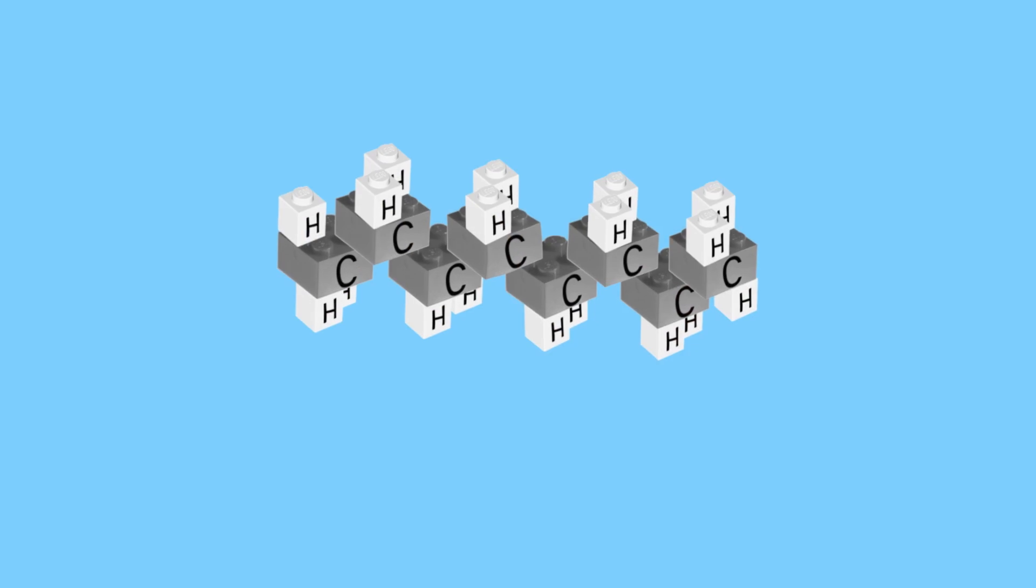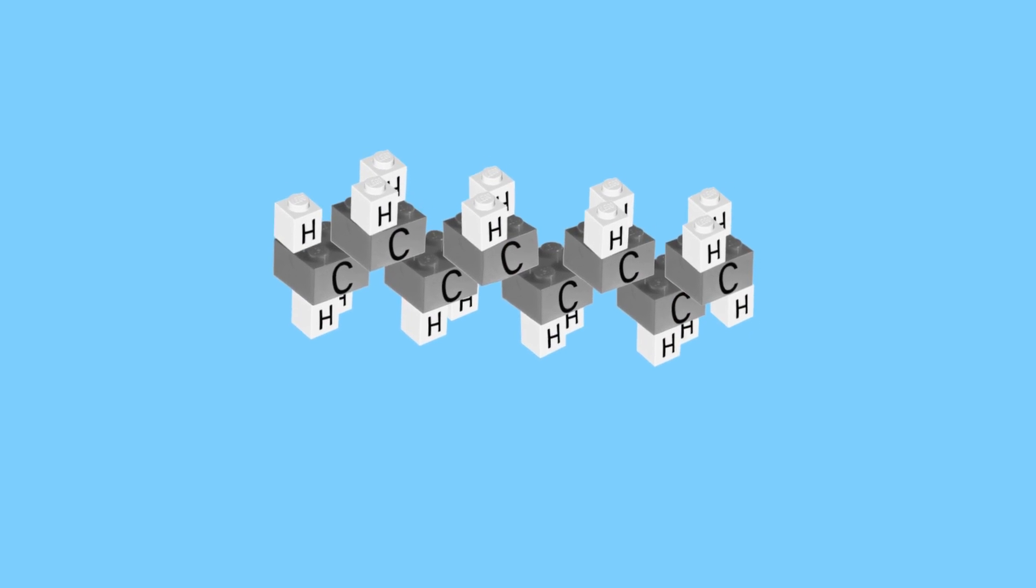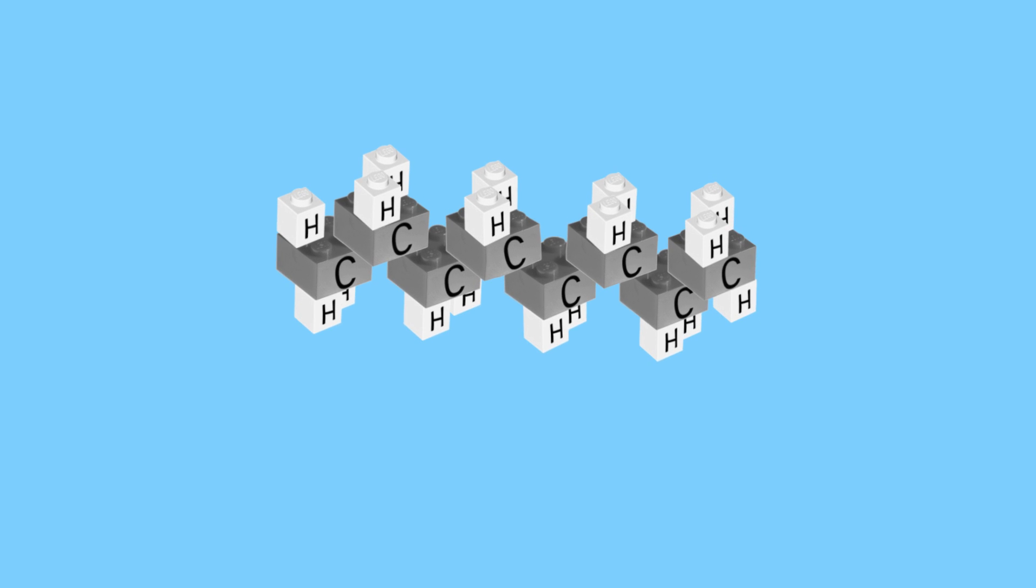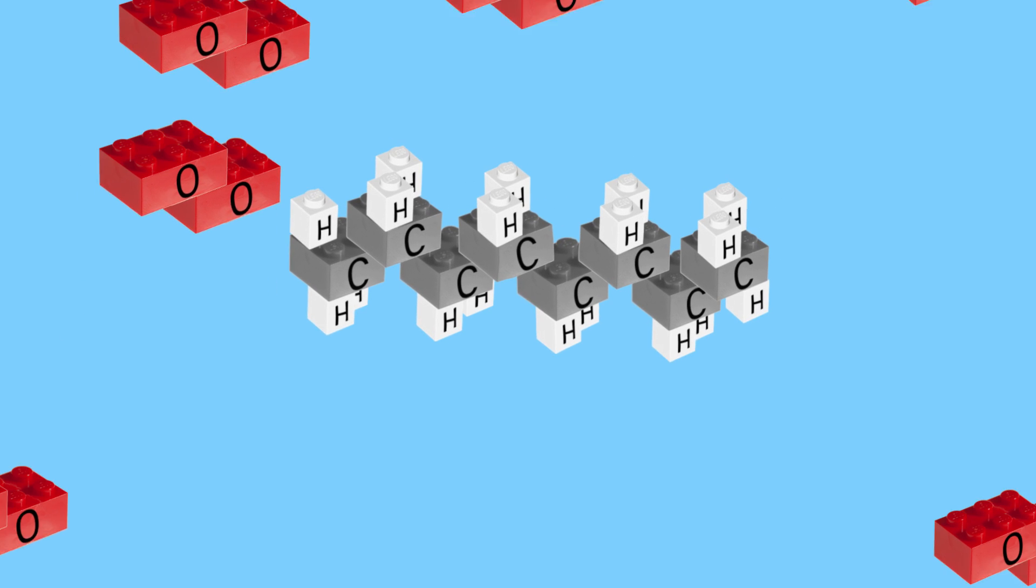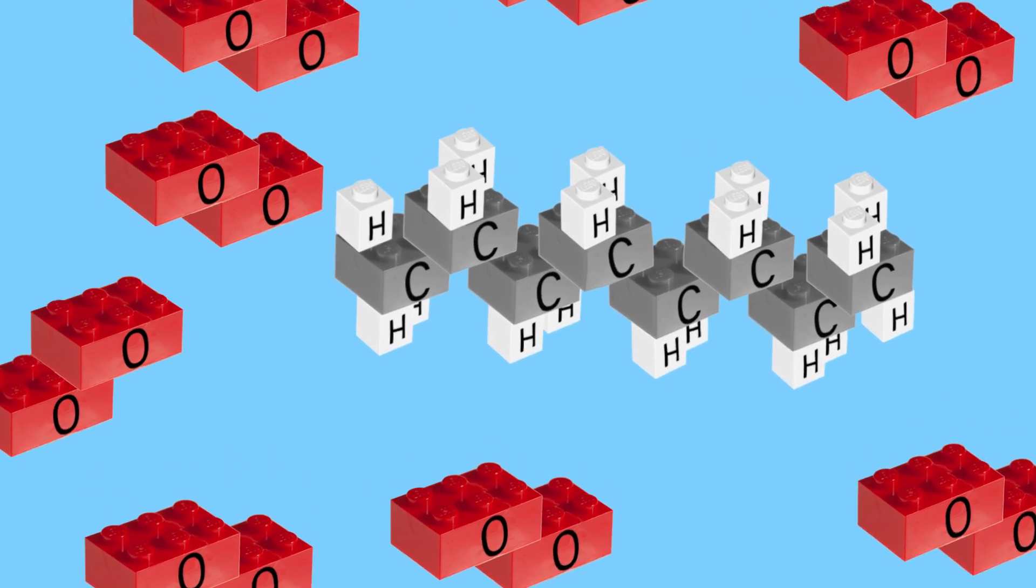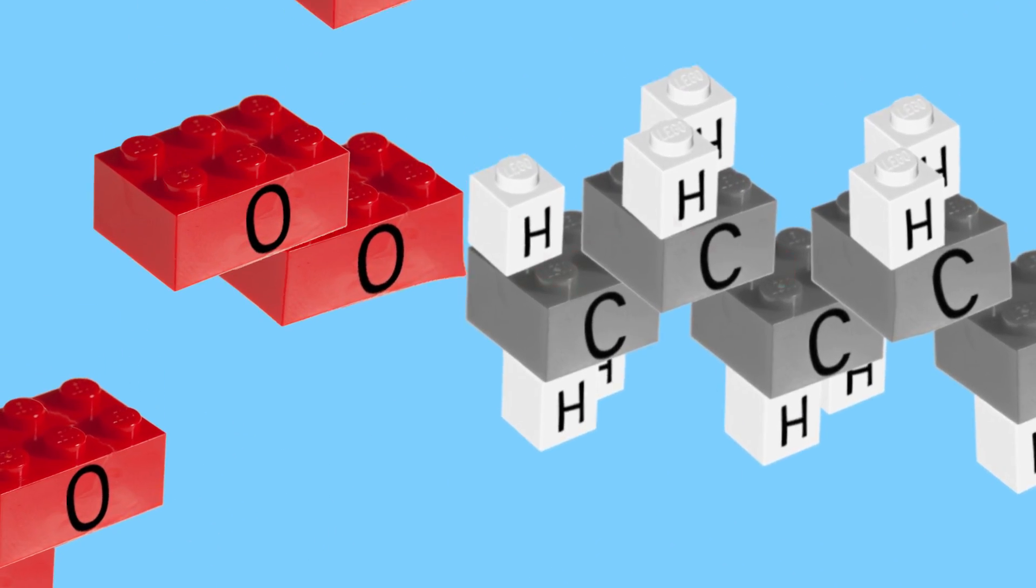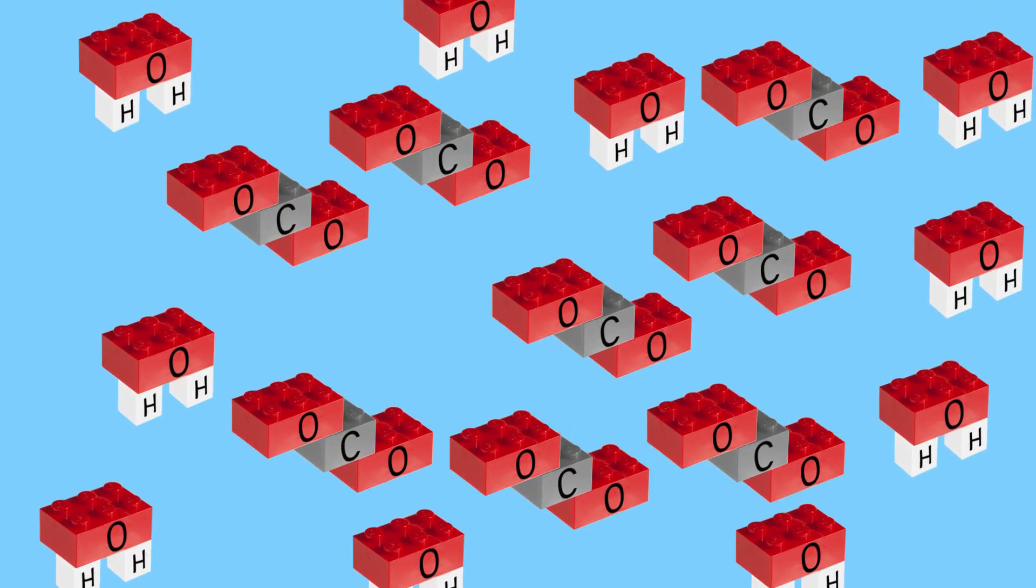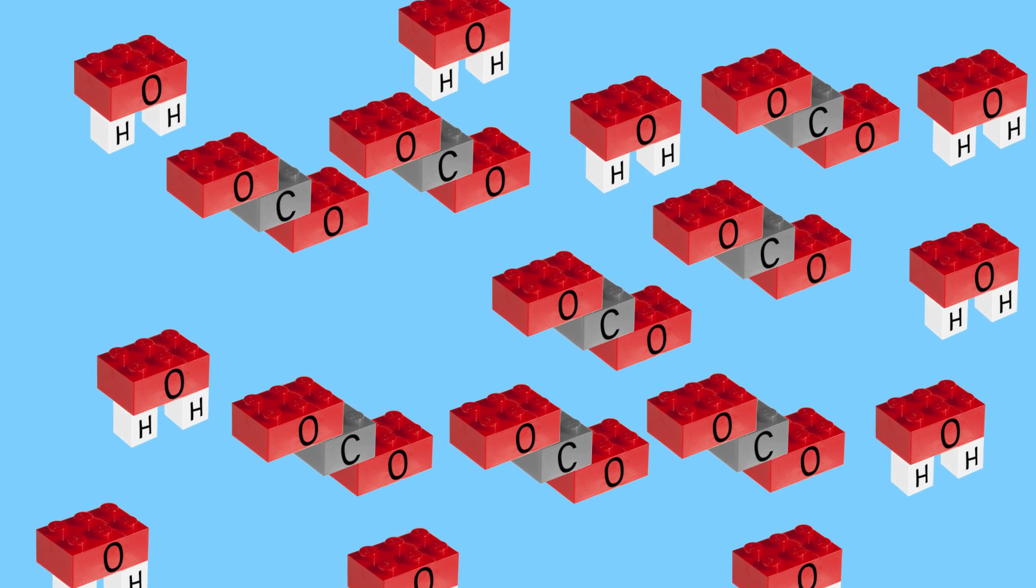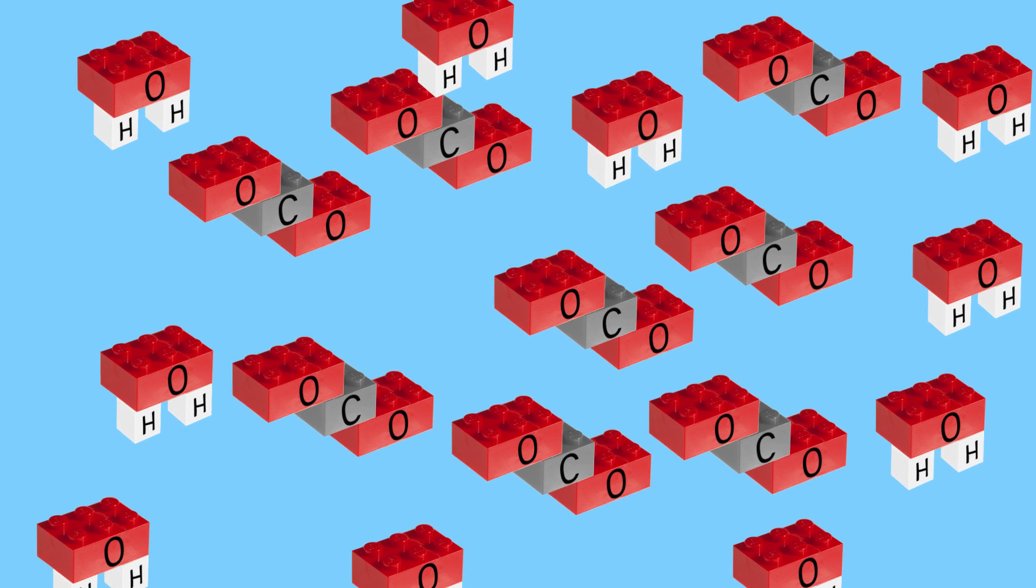But what does a fuel look like? Well, probably something like this. It's a long chain of carbon atoms. When these atoms come into contact with oxygen and are given a push, a huge amount of energy is released, and also the byproducts carbon dioxide and water. This is how a fuel works.